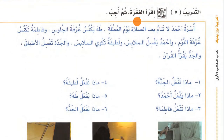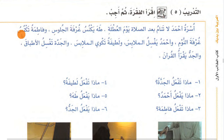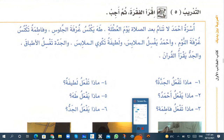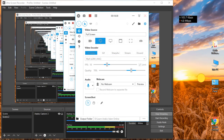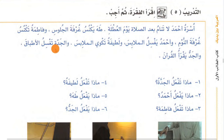At-Tadribu al-Khamis: iqra'il-fiqra thumma ajib — read the paragraph then answer. Usratu Ahmad la tanam ba'da salah yawm al-'utla — the family of Ahmad does not sleep after salah on holiday. Taha yaknusu ghurfat al-juloos — Taha sweeps the living room. Fatima taknusu ghurfat an-nawm — Fatima sweeps the bedroom. Ahmad yaksilu al-malabis — Ahmad washes the clothes. Latifah takwi al-malabis — Latifah irons the clothes. Wal-jaddatu tagsilul-atbaq — and grandmother washes the plates. Wal-jaddu yaqra'ul-Quran — and grandfather reads the Quran. The questions are written here; you will write their answers according to the paragraph.